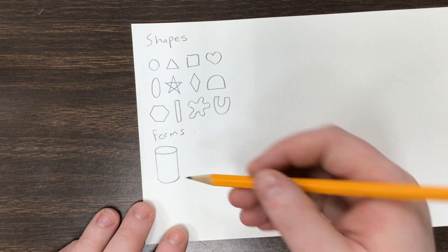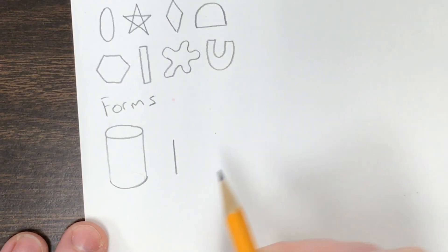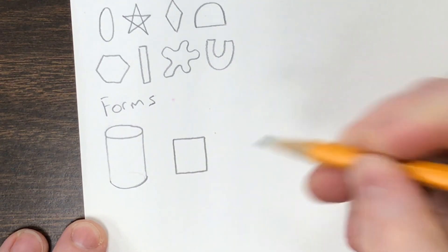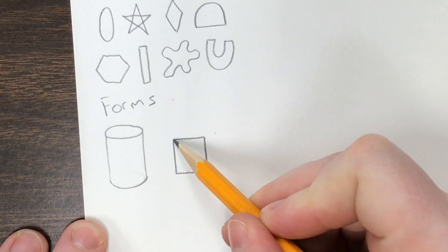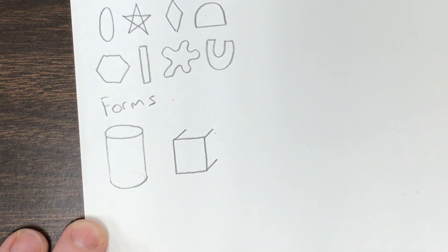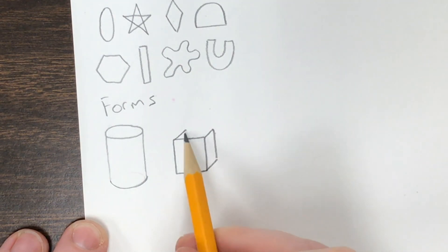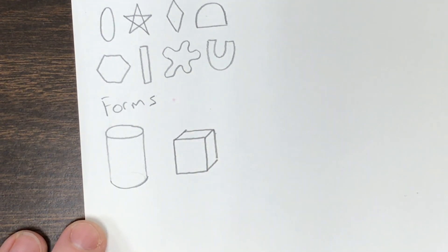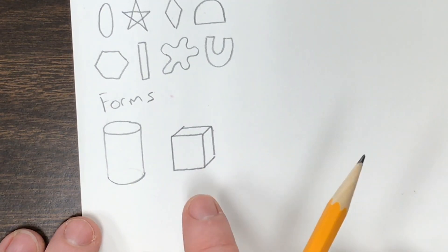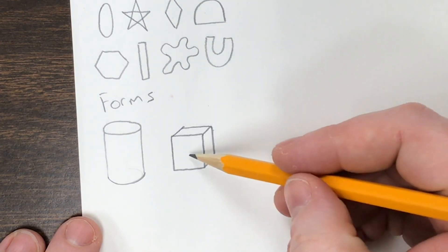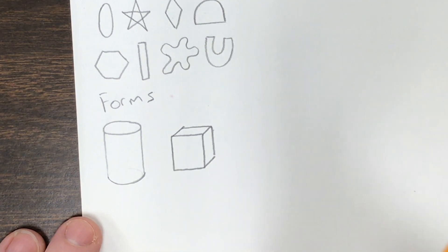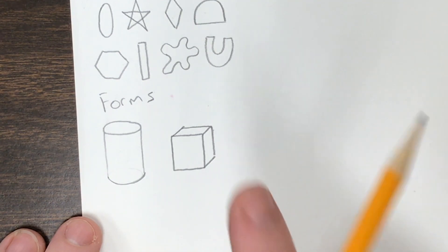The same is true for a cube. You've probably done this before — go ahead and do it with me. You draw a square, then you make little diagonal lines coming out from the corners, and then you connect the edges to make a cube. This works because a square in perspective sometimes looks like a parallelogram, but not always — it depends on which way you turn it.